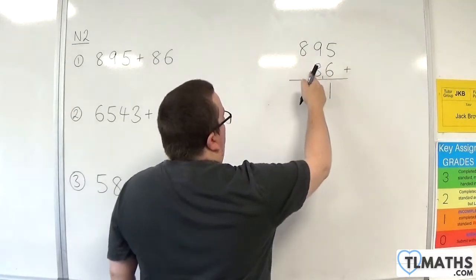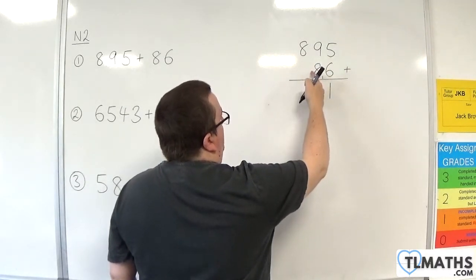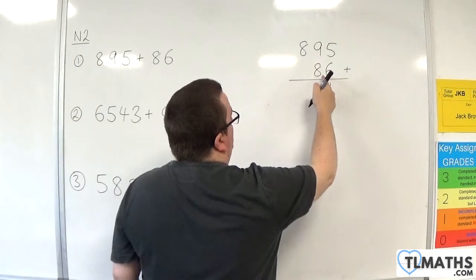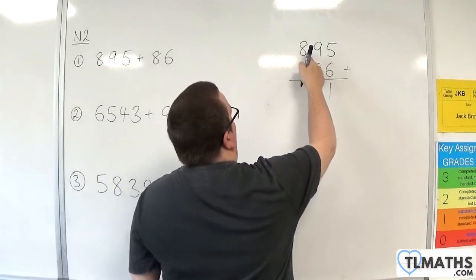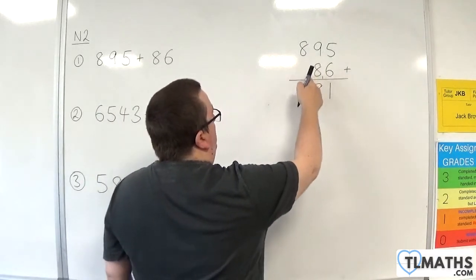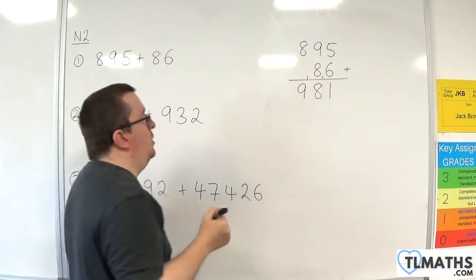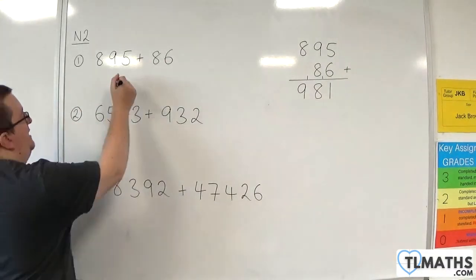Then we've got 9 plus 8, which is 17, plus the 1 that I have there, which is 18. So I put down the 8, and I carry the 1. Then I've got 8 plus nothing plus 1 is 9. So we should get 981.